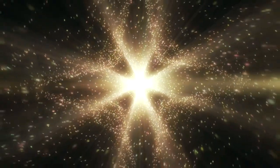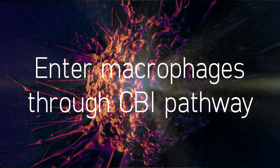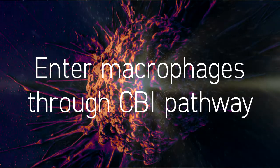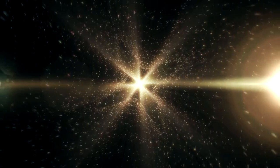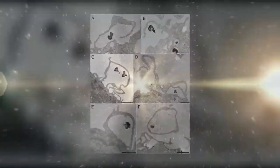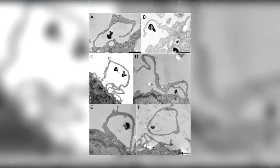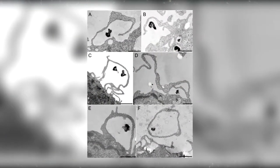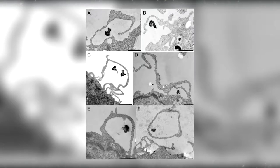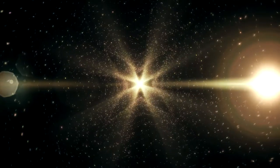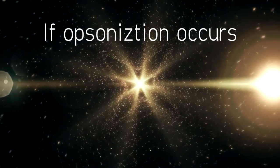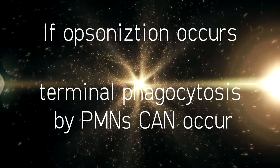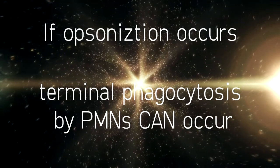Bacteria enter macrophages using the cytochalasin B-insensitive pathway without triggering the respiratory burst. Notably, the bacteria enter macrophages through a novel mechanism called looping phagocytosis, where the organism is internalized by a pseudopod loop. However, if any bacteria are opsonized in the blood, they can be phagocytosed by polymorphonuclear leukocytes.